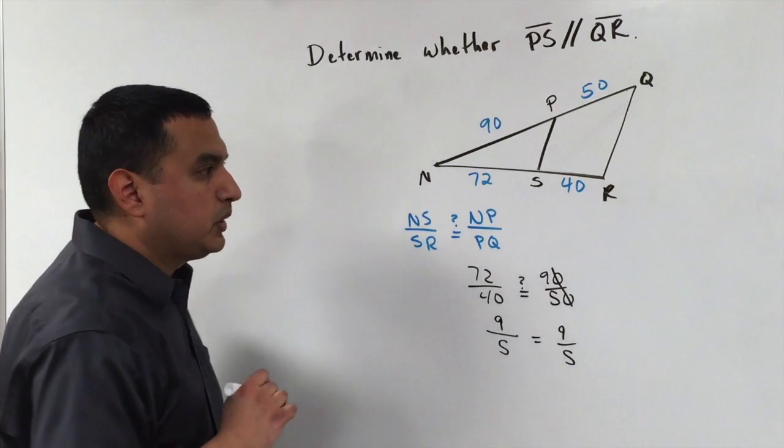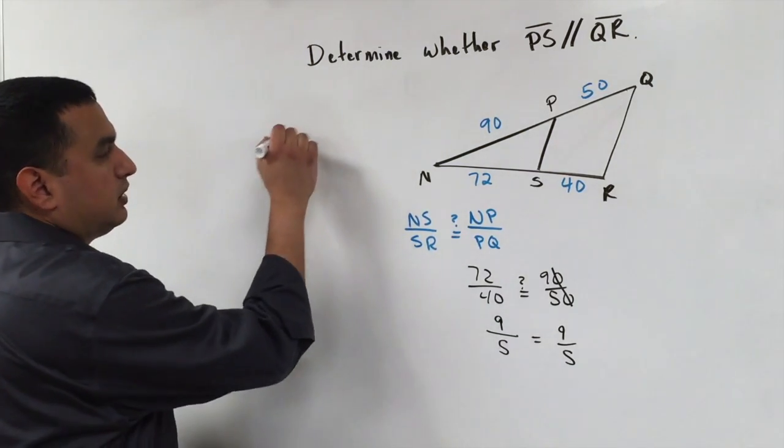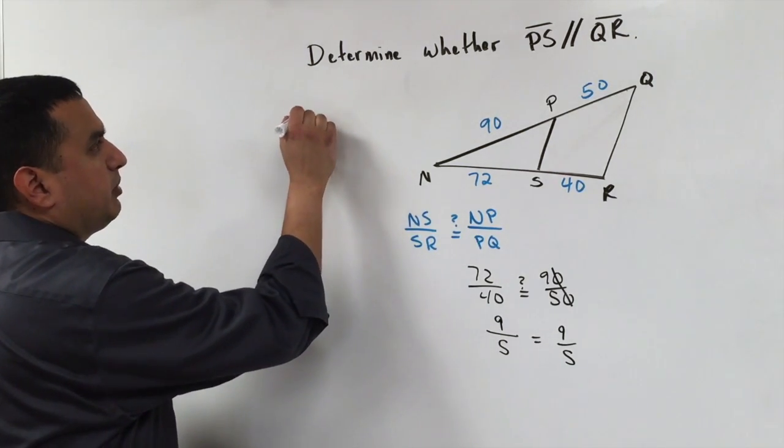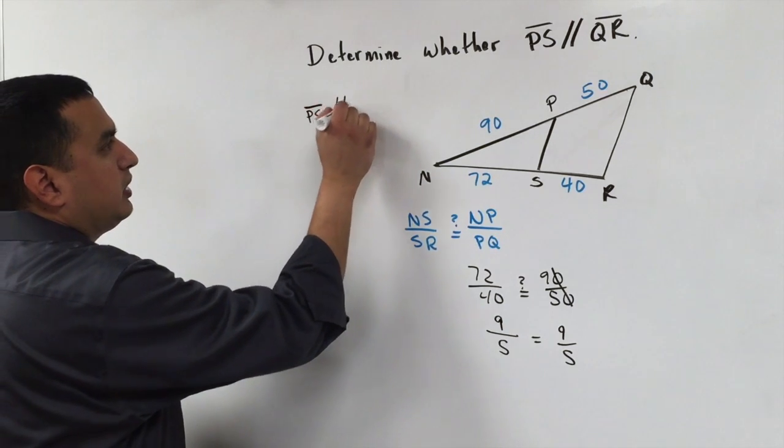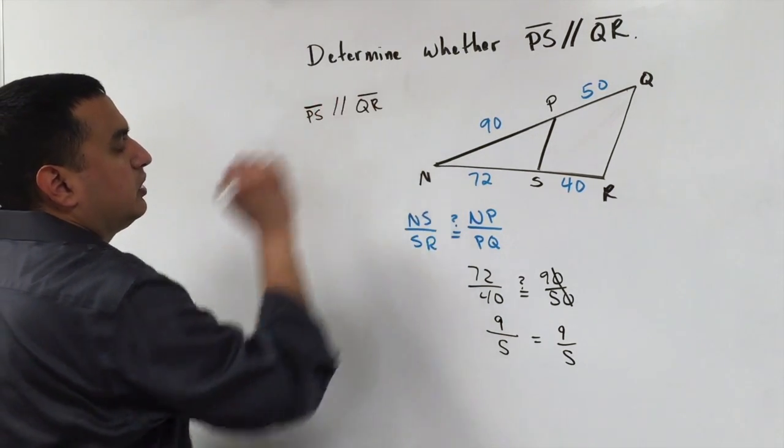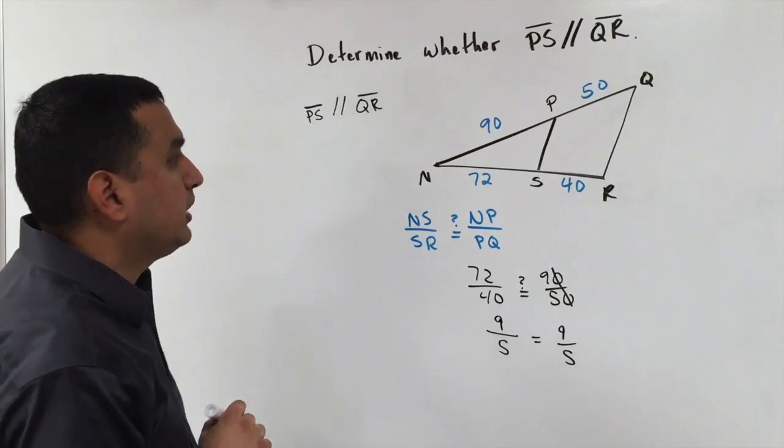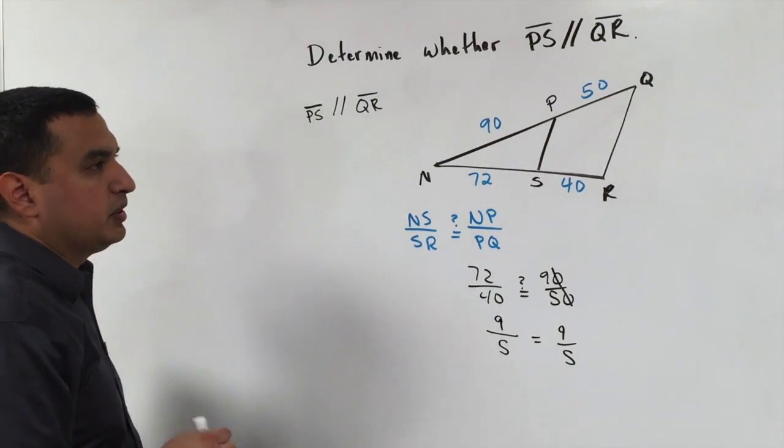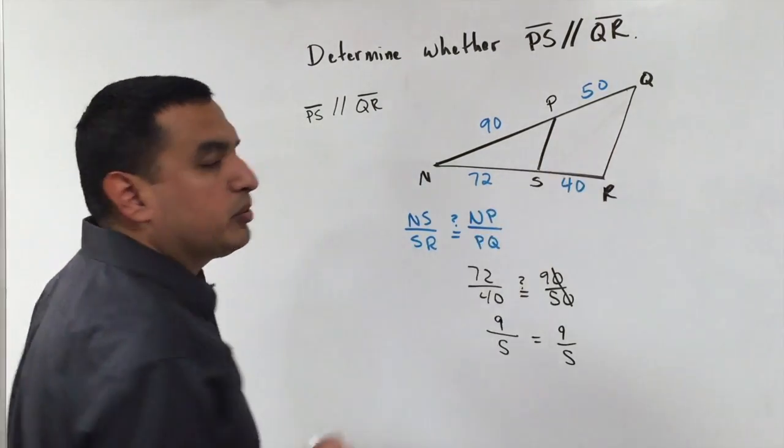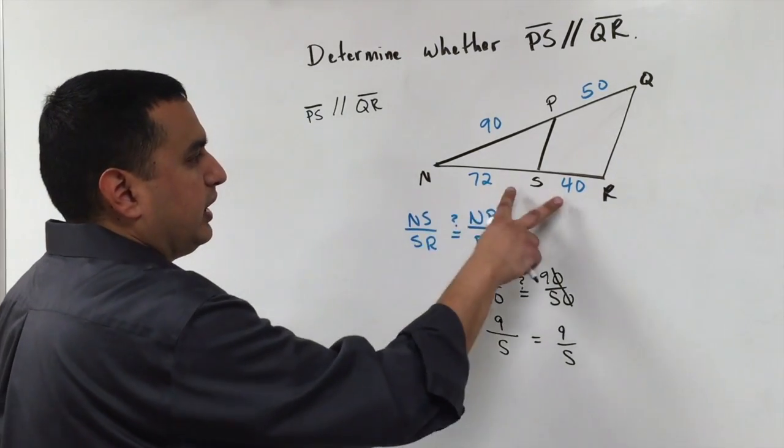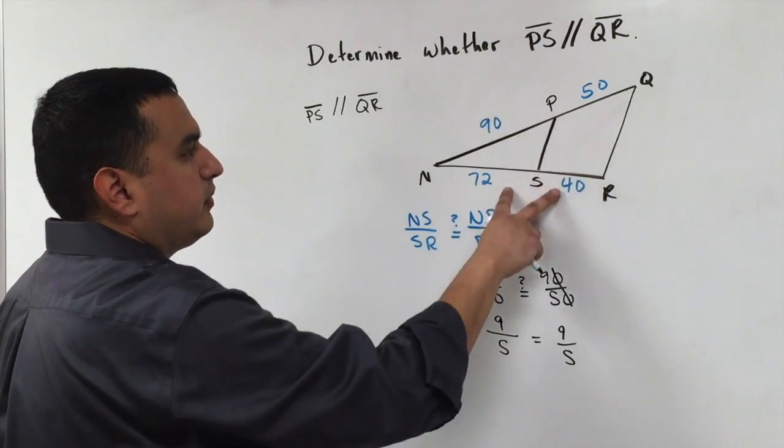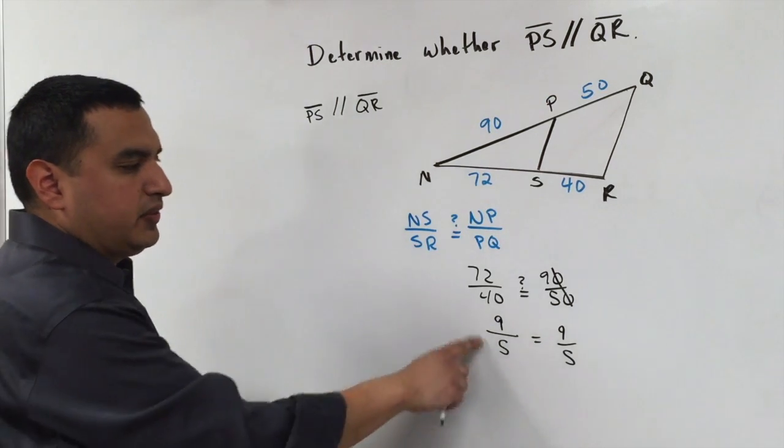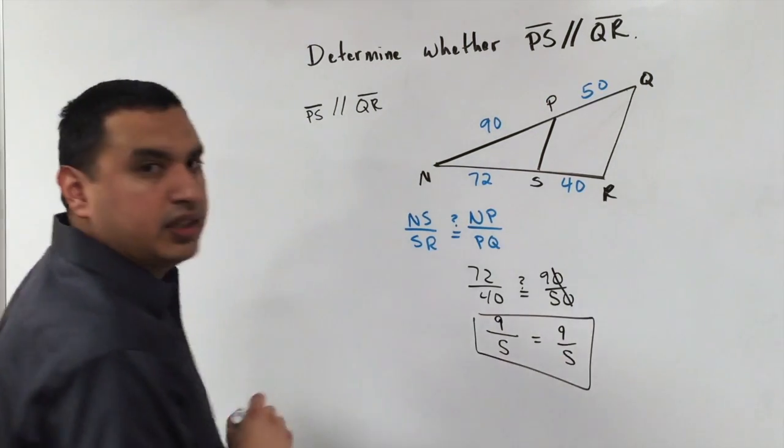They are equal, so that tells me, yes, segment PS is parallel to segment QR. Again, that was the converse of the proportionality theorem. If you're not told if these two segments are parallel, you can figure out if they are parallel by looking at the ratio of the opposite sides and seeing if they are equal, like we got here.